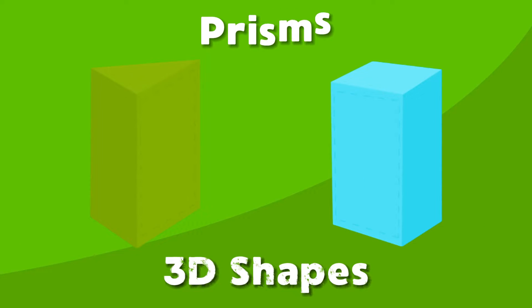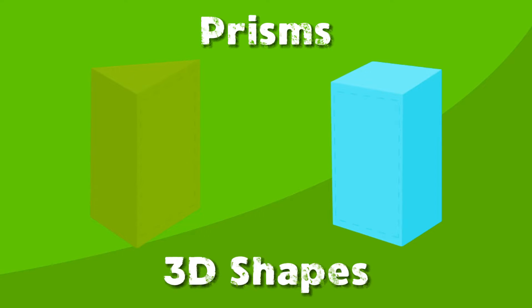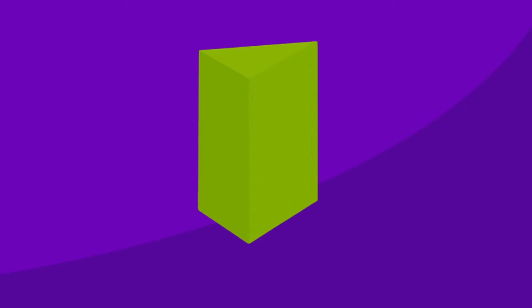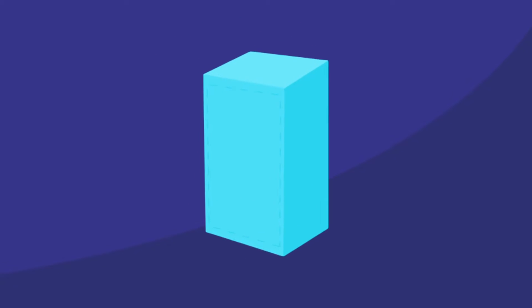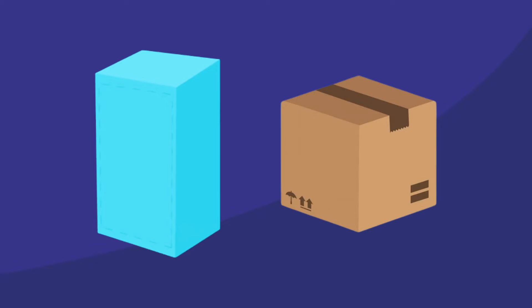A prism is a kind of 3D shape where the top and bottom faces are the same. A triangular prism is a 3D shape that is two equilateral triangles connected to each other by edges. The rectangular prism is the same, but with a different shape — it is shaped like a box made of rectangles.